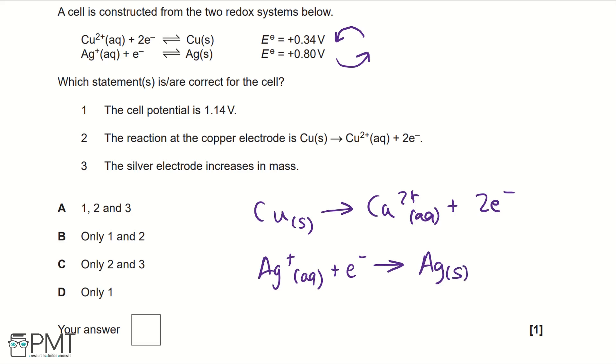If we look at our one, two, and three statements, we can establish that number two is correct because we've rearranged and looked at the electrode potentials to match that equation. Looking at number three, the silver electrode increases in mass - we've said that silver solid is being produced, so if more solid is being produced, mass is going to increase, making three correct. So immediately we can eliminate D, and we can also eliminate B from our options.